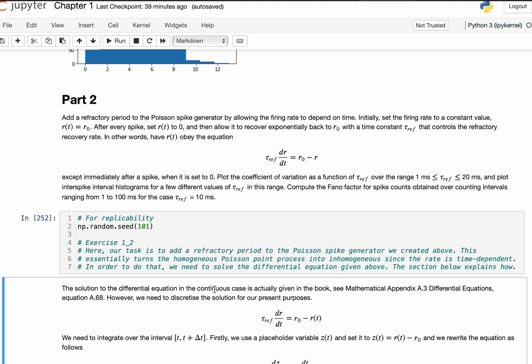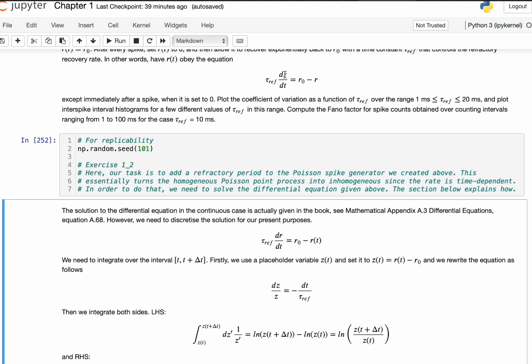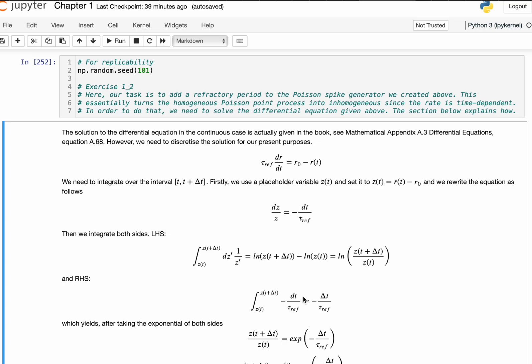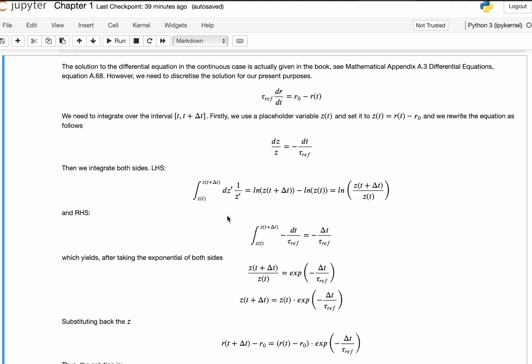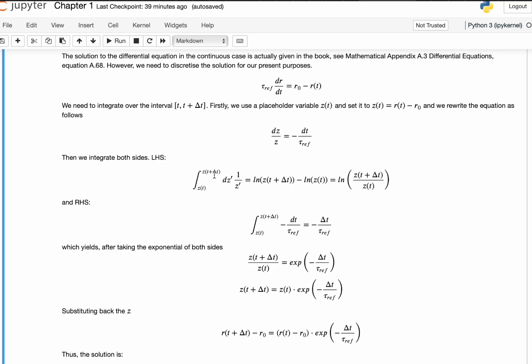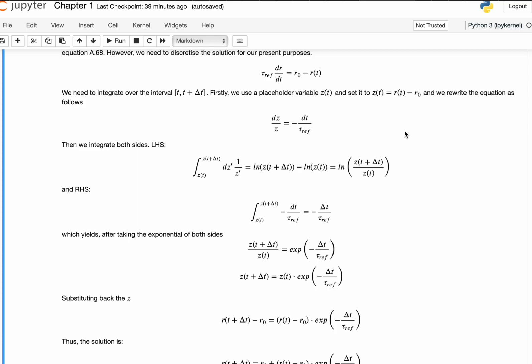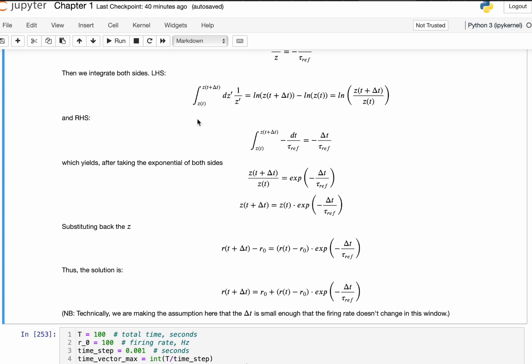So, in particular, what we want to do is we want to get an exact solution for the change in R. Essentially, what we need to do is we want to integrate from the time t to the time delta t, so delta t plus t, so a very short interval of time and see how the firing rate changes. And we're going to be using this substitution z, so that's going to look like this, the firing rate at any given time t minus the steady state firing rate, so that would be 100 hertz in our case.